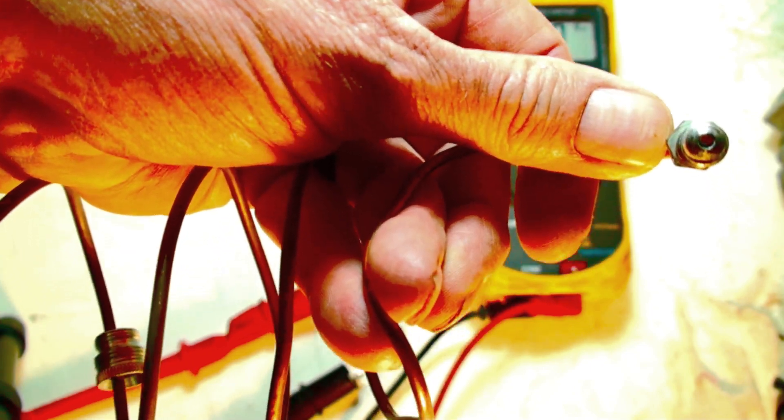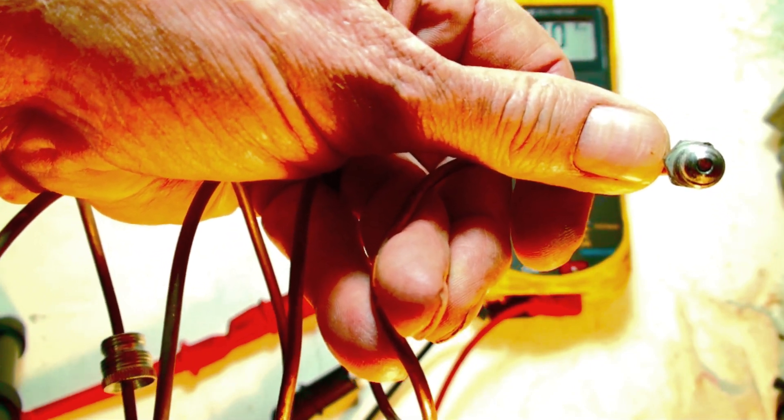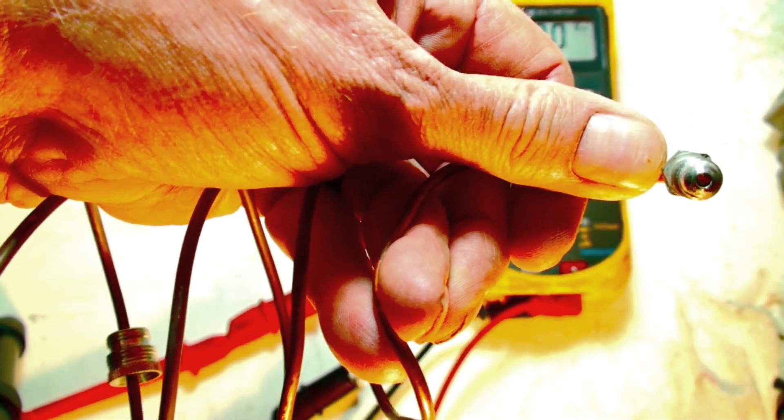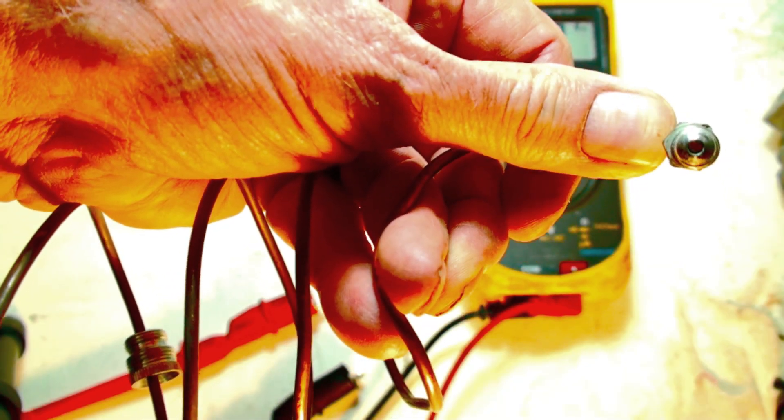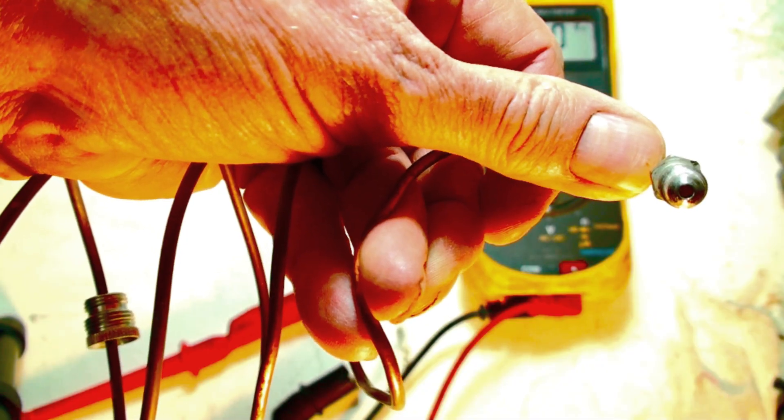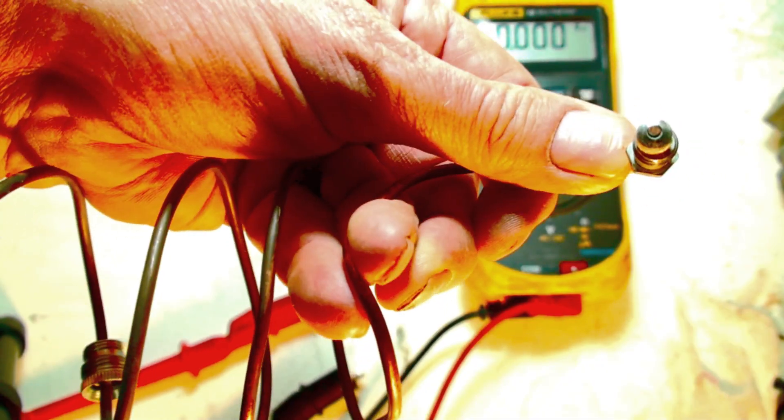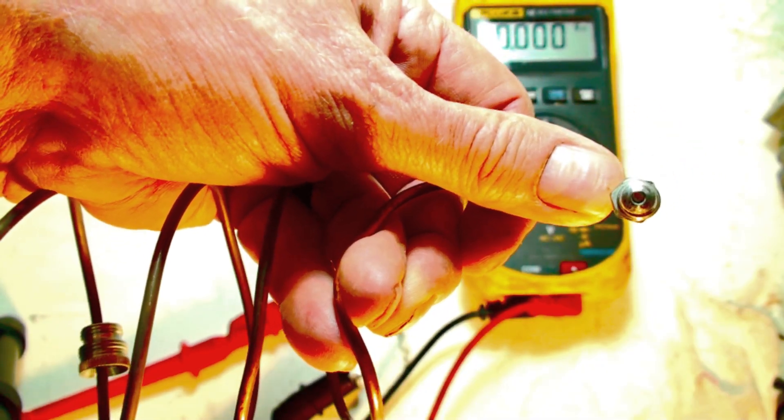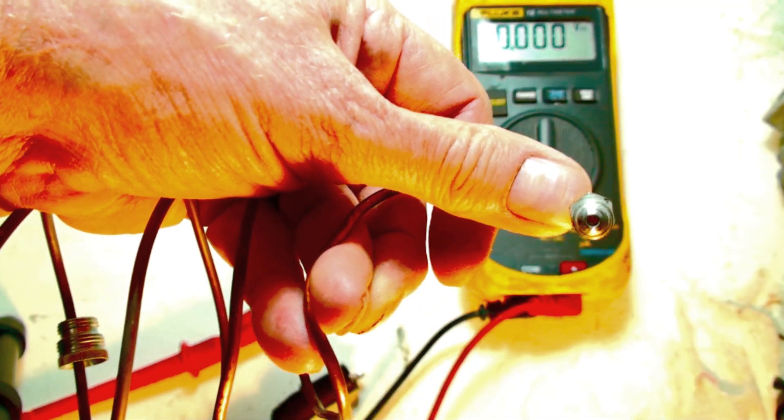That button needs to have very good contact, so it needs to be clean. It does not need to be sanded—do not sand this thing. Take and rub the end of it on your shirt sleeve. That works really good to clean these up. See, we're only dealing in up to 30 millivolts.